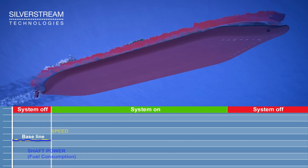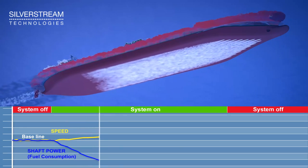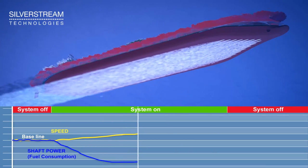Unlike most other technologies, air lubrication offers the possibility of monitoring and verifying the fuel saving at all times, simply by switching the system on and off.